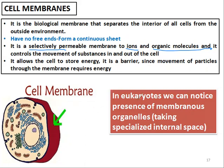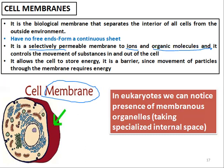In eukaryotes, we notice the presence of membranous organelles. When I say cell membrane, there is no other cell membrane in prokaryotes. But for eukaryotes, there is an increase in the cell membrane because of the organelles. This scheme represents a eukaryotic cell. How do you know that it is eukaryotic and not prokaryotic? Because there is a nucleus, endoplasmic reticulum, Golgi, and mitochondria — these organelles are only found in eukaryotic cells.